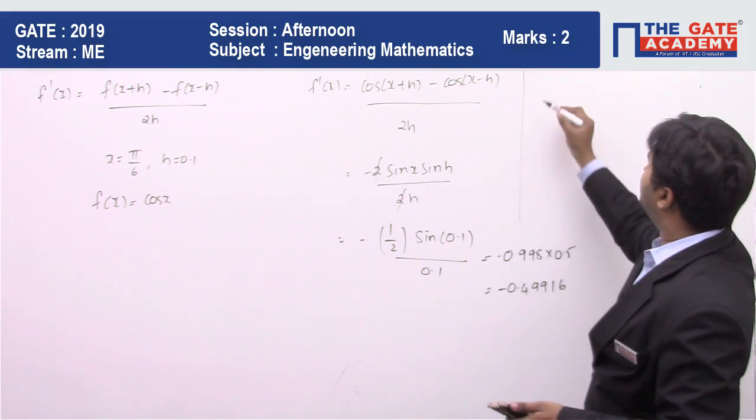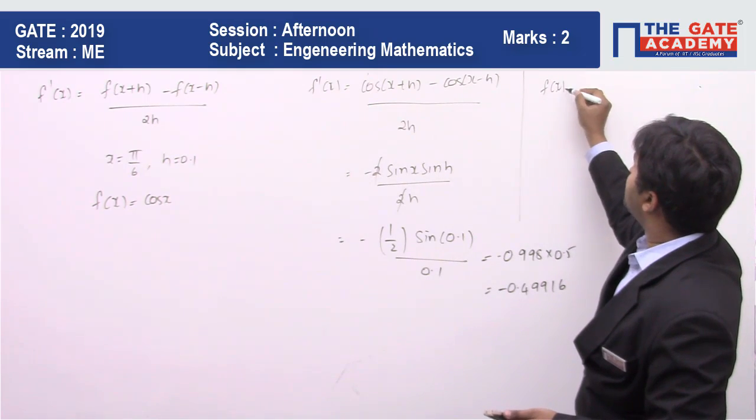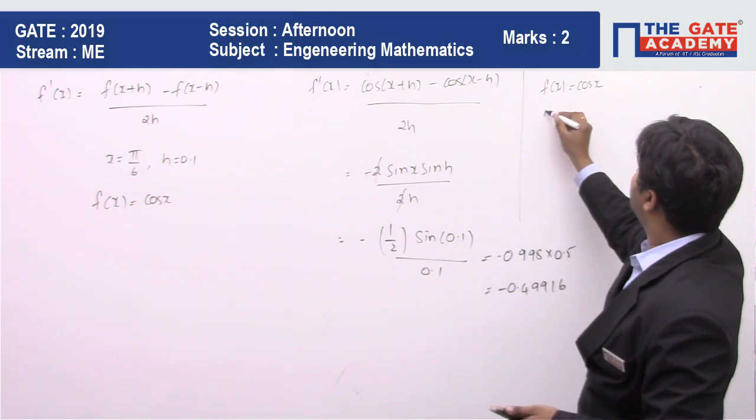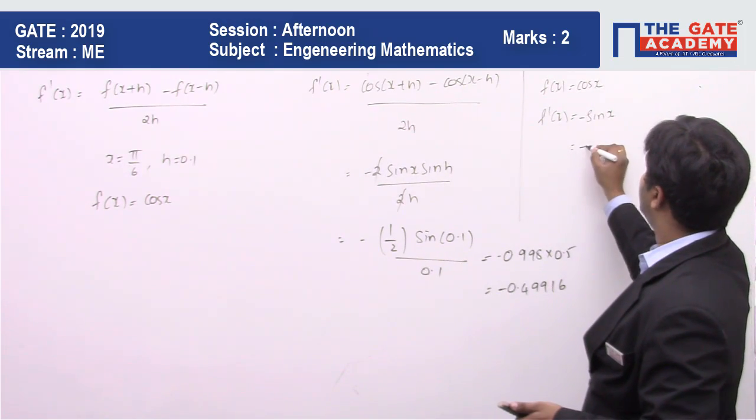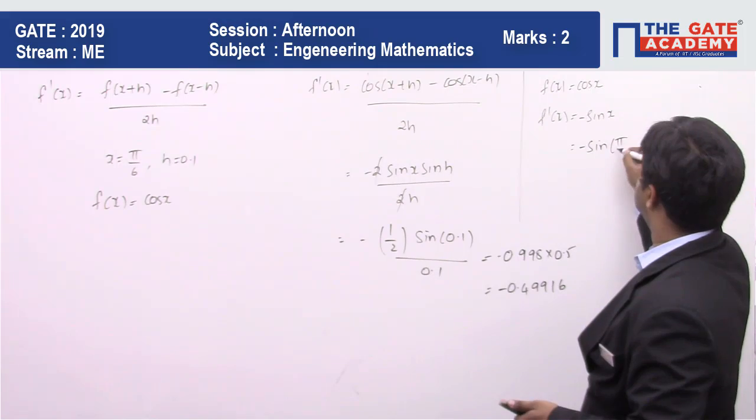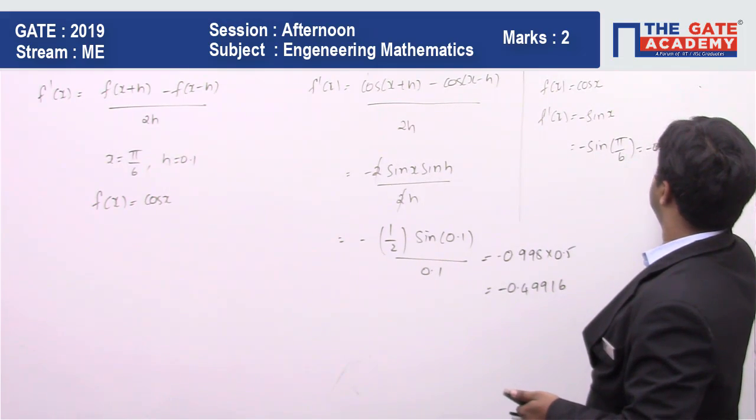So if we directly use the method f(x) = cos(x), f'(x) is going to be -sin(x), and then you put the value of -sin(π/6), it is equal to -0.5. Here we are having the approximate value and here we are having the true value.